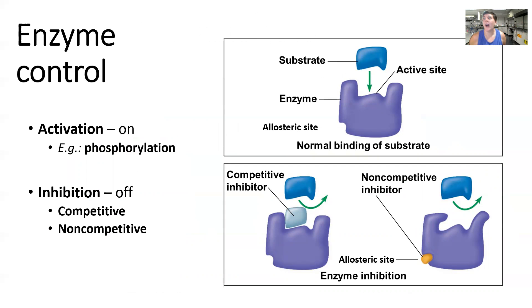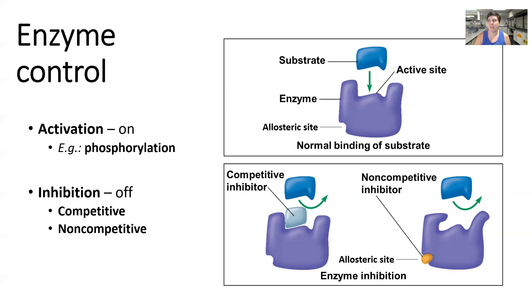How are enzymes controlled? Because enzymes basically regulate the majority of our metabolic processes, we need to be able to control them. We can control them via the process of activation, which means turning them on, or inhibition, which means turning them off. Activation can occur in a variety of ways — a really common one is the act of phosphorylation, or adding a phosphate group to an enzyme. What we want to talk about most is enzyme inhibition. There are two primary methods: competitive inhibitors and non-competitive inhibitors.